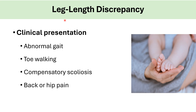Clinical presentation of leg length discrepancy: asymptomatic if the difference is minimal, like the previous case. Otherwise, they can have symptoms like abnormal gait, tip-toe walking, compensatory scoliosis, back pain, or hip pain.